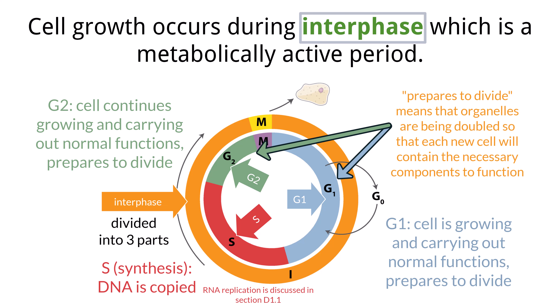Organelles and cytoplasm must be doubled during interphase so that each daughter cell has the correct number of organelles and amount of cytoplasm. It is important to remember that the cell does not stop functioning while preparing to divide. Proteins must still be made, cell respiration must continue, and plants continue to undergo photosynthesis.